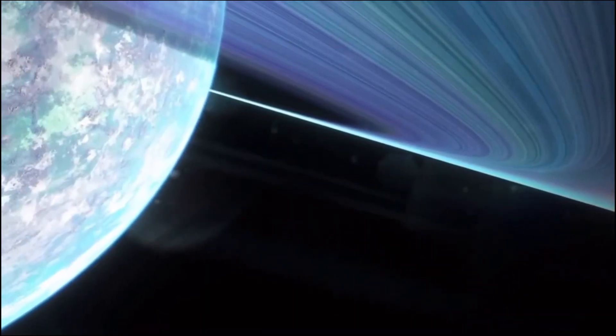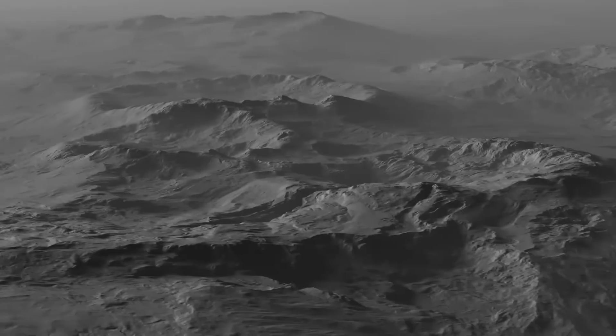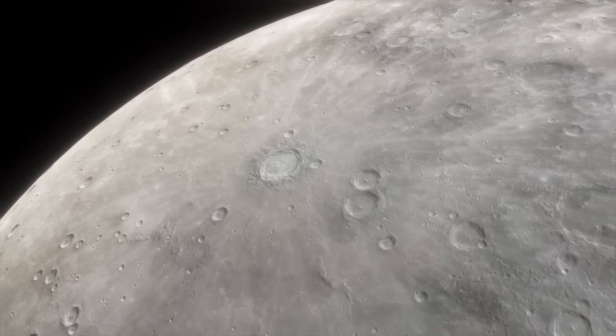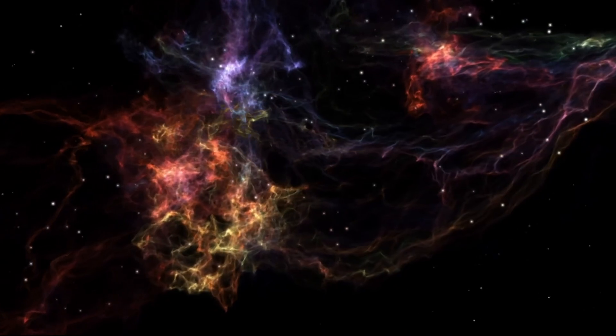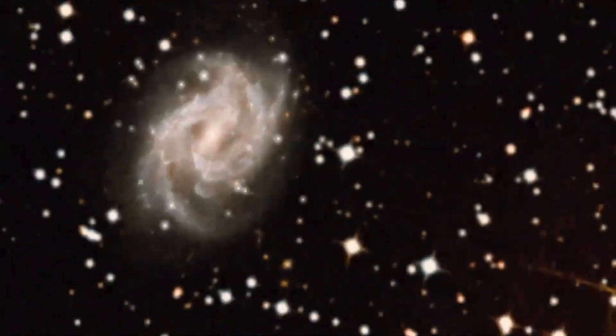To put Jupiter's size into perspective, its volume is estimated to be more than 1,431 times that of Earth. It is actually so large that it surpasses the combined size of all the other worlds in our solar system. Its gravitational field is more than 2.5 times stronger than Earth's, indicating that it possesses a powerful attraction.